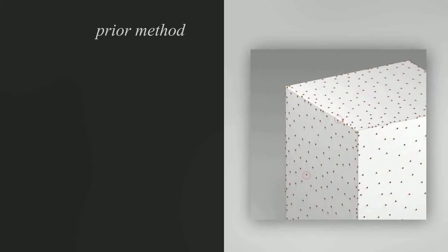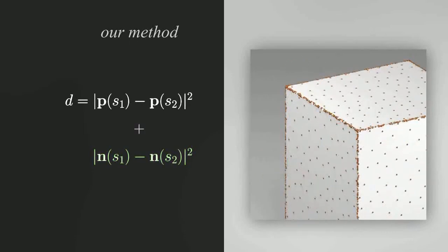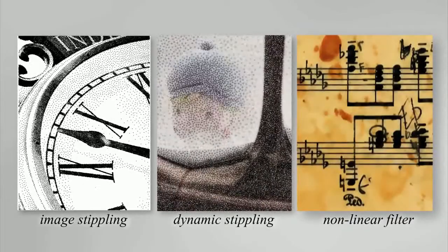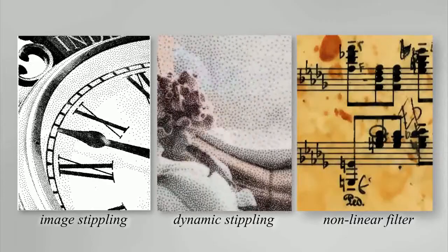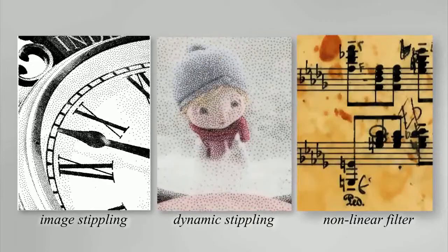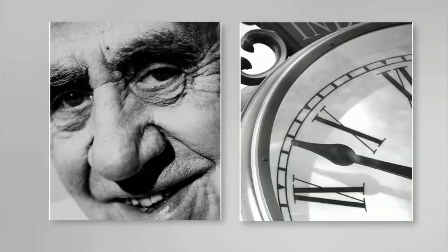Our key idea is very simple. Instead of considering just spatial positions as in prior methods, we consider both positions and features. This is analogous to bilateral filtering, which also considers both positions and colors as features. By using different features, our idea can be applied to a variety of different applications.